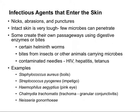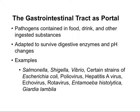Contaminated needles are also a big source of microbes entering through the skin — there are usually microbes on the skin that can be introduced by using the needle, plus there could be microbes on the needle itself. HIV, hepatitis, and tetanus are often introduced through these manners. Other microbes that enter through the skin include Staphylococcus aureus, which causes boils; Streptococcus pyogenes, causing impetigo; Haemophilus aegyptius, causing pink eye; Chlamydia trachomatis, causing trachoma or granular conjunctivitis; and Neisseria gonorrhea. The skin generally has to have some form of nick, abrasion, or puncture in order to permit entry.